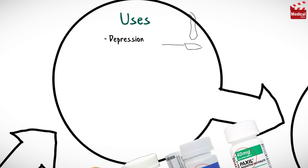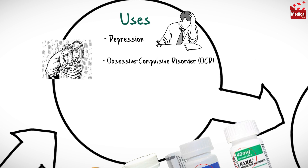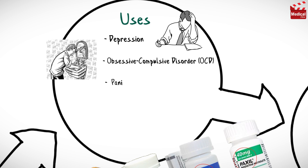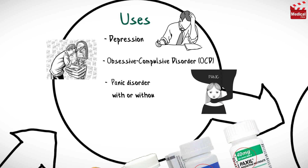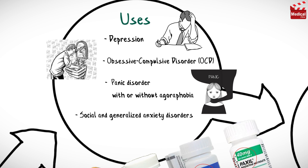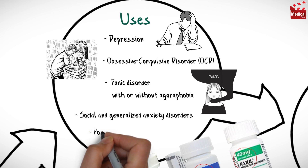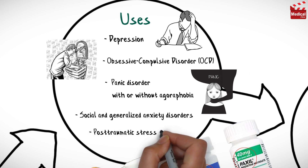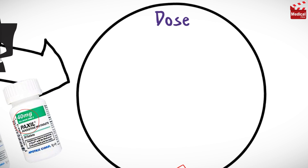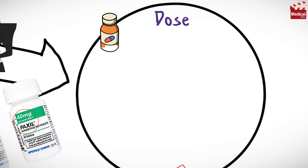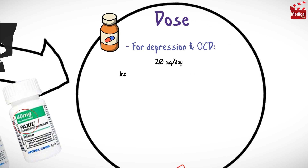Paroxetine is used for depression, obsessive compulsive disorder, panic disorder with or without agoraphobia, social and generalized anxiety disorders, and post-traumatic stress disorder. The usual dosage for depression and obsessive compulsive disorder in adults is 20 milligrams per day.